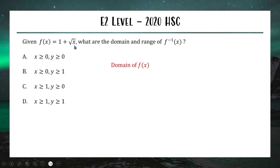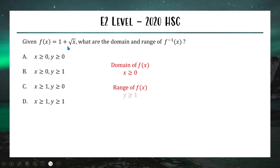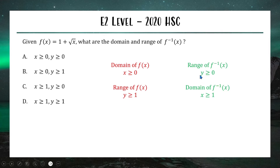The function has a square root of x, and we can only take the square root of non-negative numbers, so the domain is x ≥ 0. The square root always gives a non-negative output, so one plus a square root is always ≥ 1, giving a range of y ≥ 1. Swapping these: the range of the inverse is y > 0 and the domain is x ≥ 1, so option C is the correct answer.